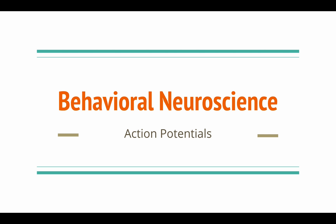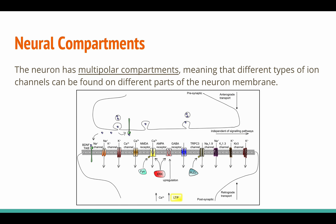Neurons communicate with one another through brief periods of electrical stimulation called action potentials. To understand how action potentials work, let's look at how the neuronal membrane is designed to carry voltage from one part of the cell to another. The membrane is a fluid mosaic, studded with complex protein structures that act as ion channels for incoming and outgoing chemical ions. These neural compartments are found all throughout the membrane and are specific to each ion.